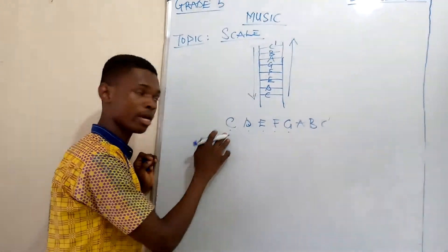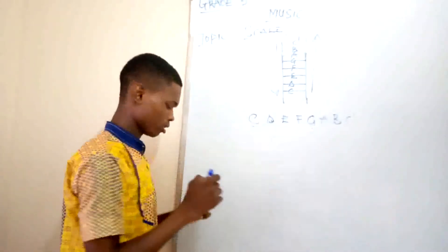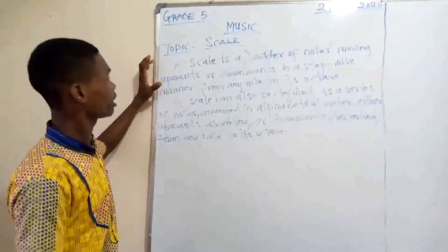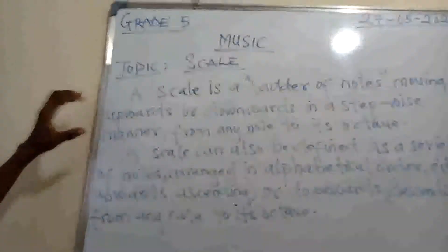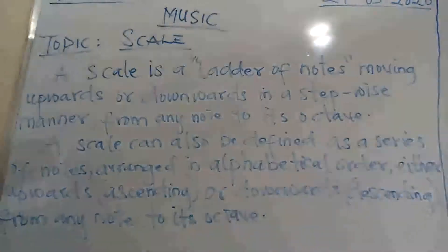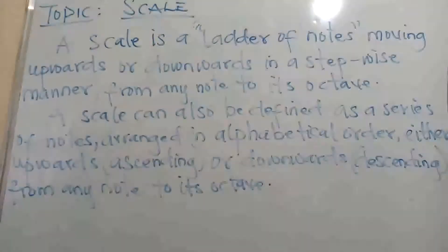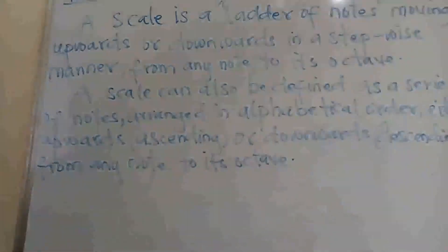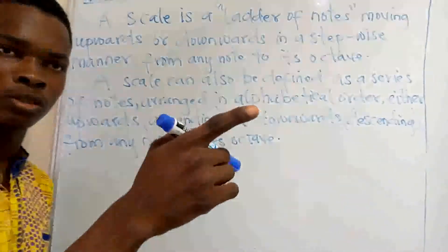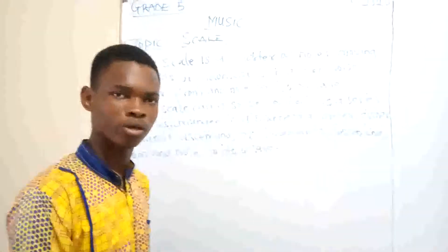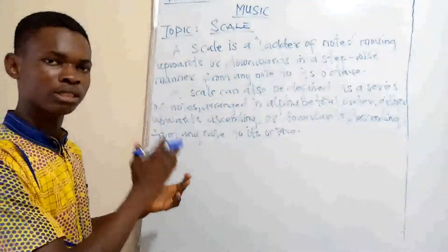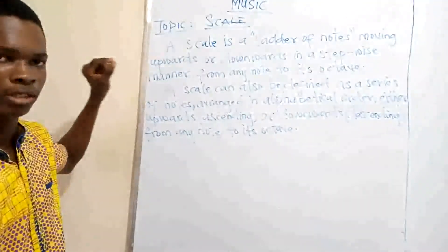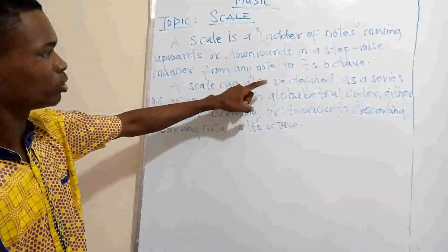The scale starts from C and ends on C. A scale is a ladder of notes moving upwards or downwards in a stepwise manner from any note to its octave. It moves in a stepwise manner like climbing a staircase — you don't jump to the last floor; you climb step by step. So a scale progresses step by step until it gets to the last note.